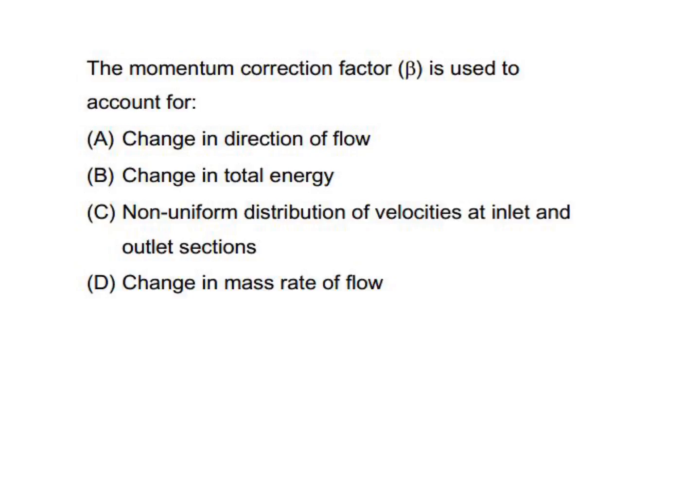The momentum correction factor beta is used to account for: A: change in direction of flow? No. B: change in total energy? No. C: non-uniform distribution of velocities at inlet and outlet sections? Yes — C is the answer.